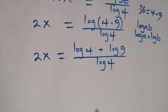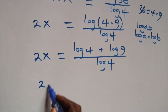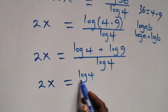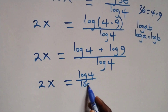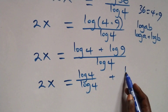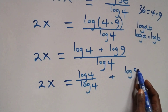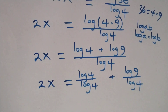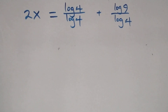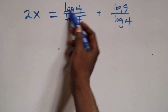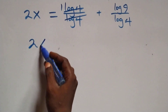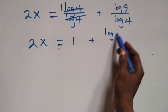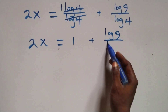Then we separate this into two fractions and we have 2x equals log 4 over log 4, plus log 9 over log 4. The log 4 terms cancel each other, leaving 1, and we have 2x equals 1 plus log 9 over log 4.